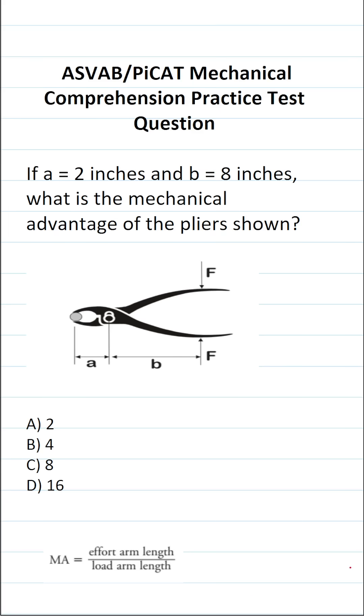This mechanical comprehension practice test question for the ASVAB and PyCat says, if A is 2 inches and B is 8 inches, what is the mechanical advantage of the pliers shown? So we know B is 8 inches and A is 2 inches.